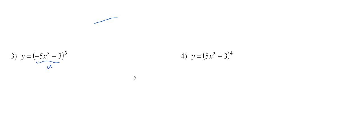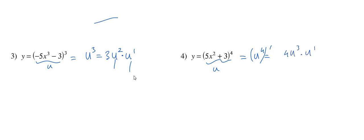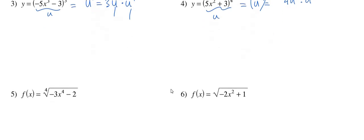For nested powers like u cubed, differentiate as 3u squared times u prime, then substitute u back. For a fourth power of u, differentiate as 4u cubed times u prime. For a radical with a fourth-index root, rewrite as u to the one-fourth, so the derivative is one-fourth times u to the negative three-fourths times u prime. This substitution technique makes the chain rule systematic for any composite function.